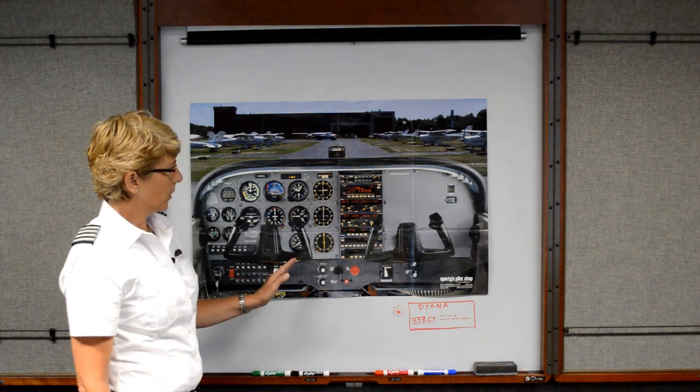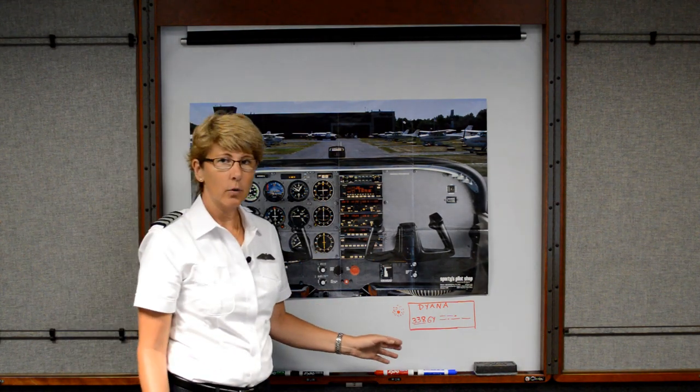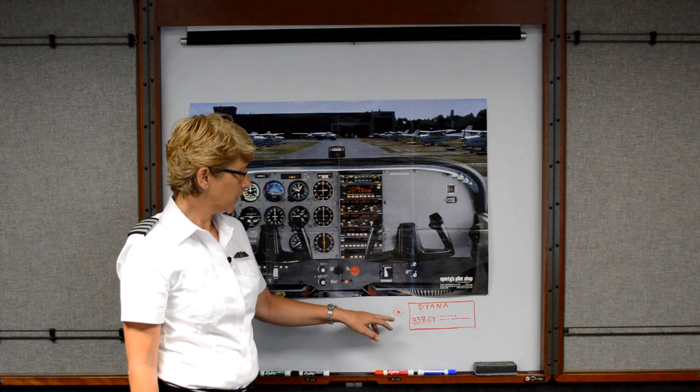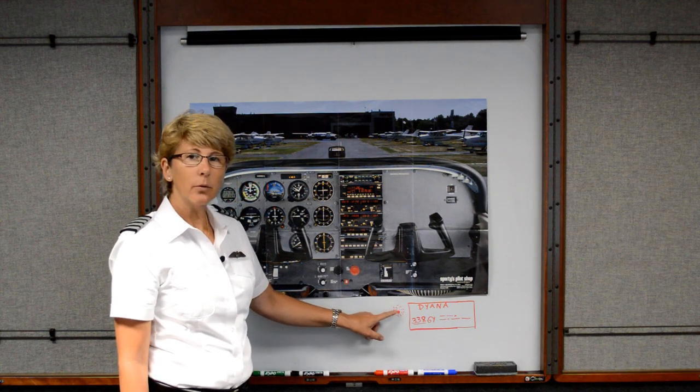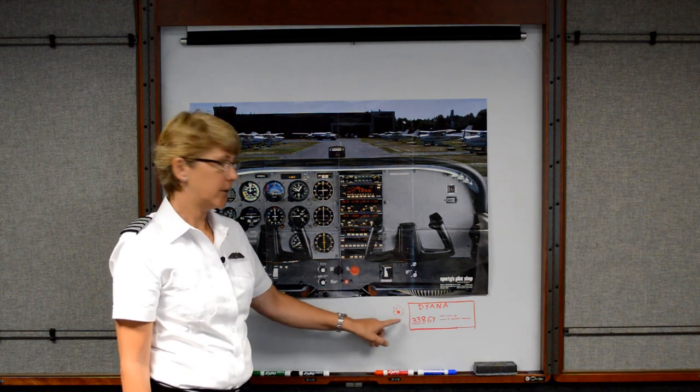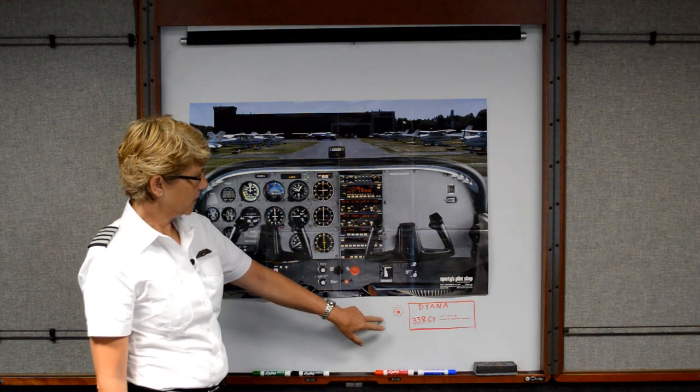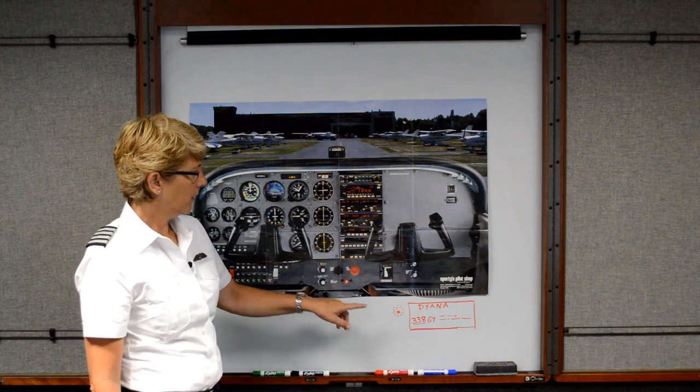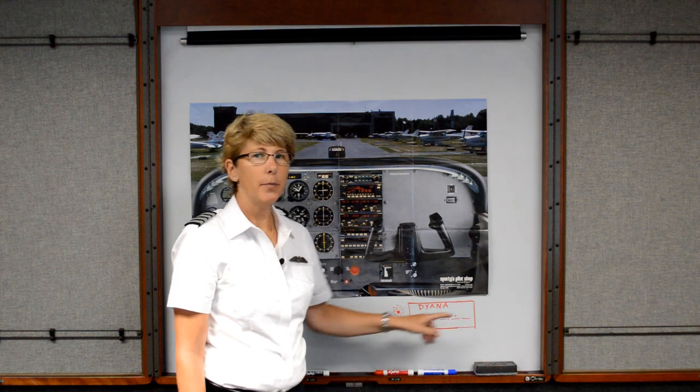So how this instrument works is on your sectional chart or low-enroute chart, if you're flying instruments, you'll see a little red dot with some dots around that, and that's what the symbol for the NDB looks like, and then there will be an information box paired with it.